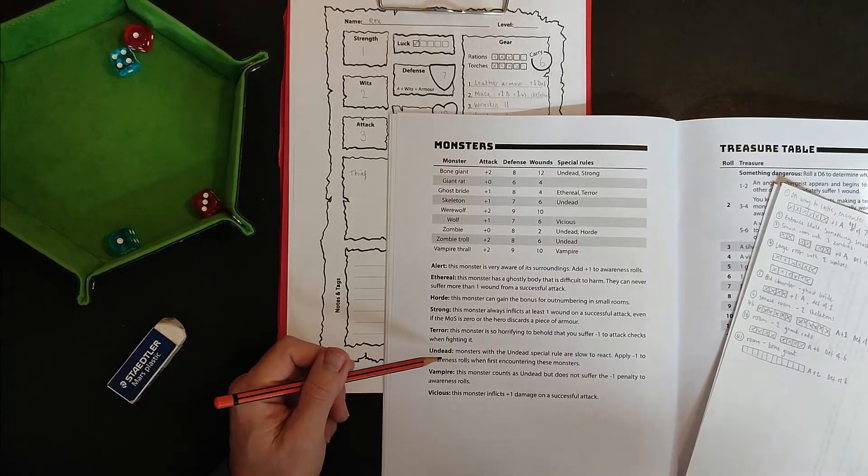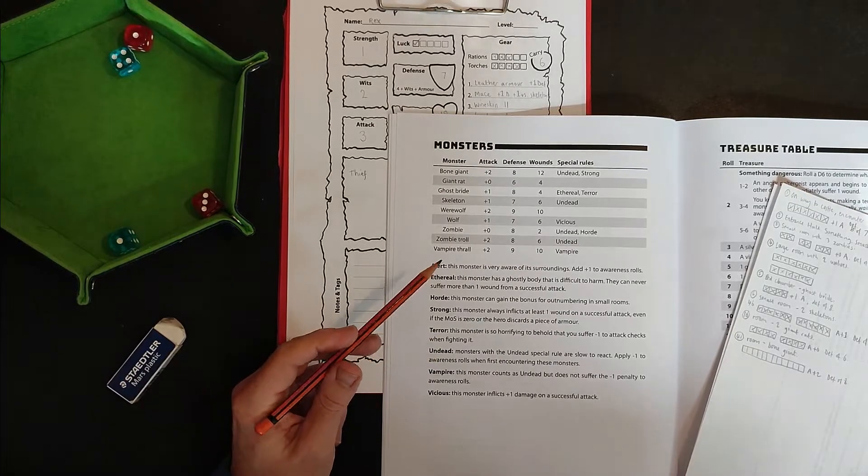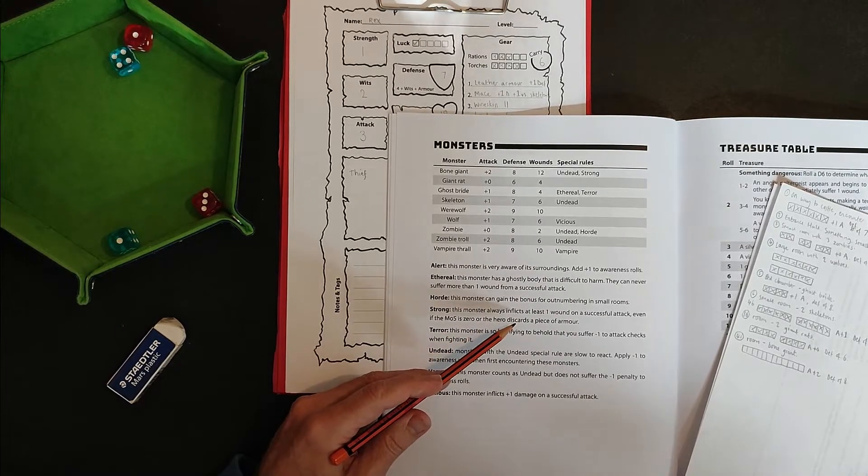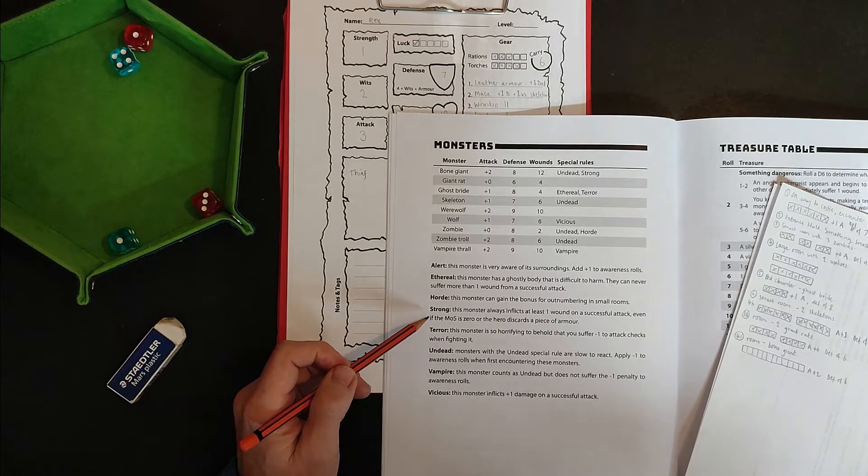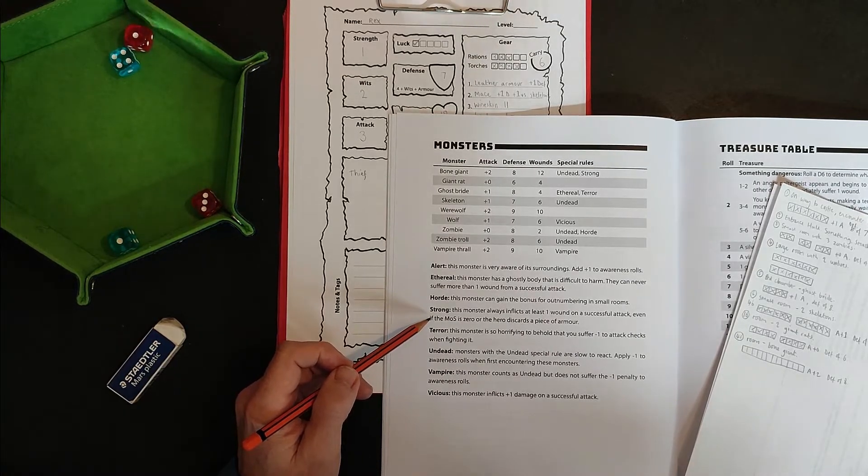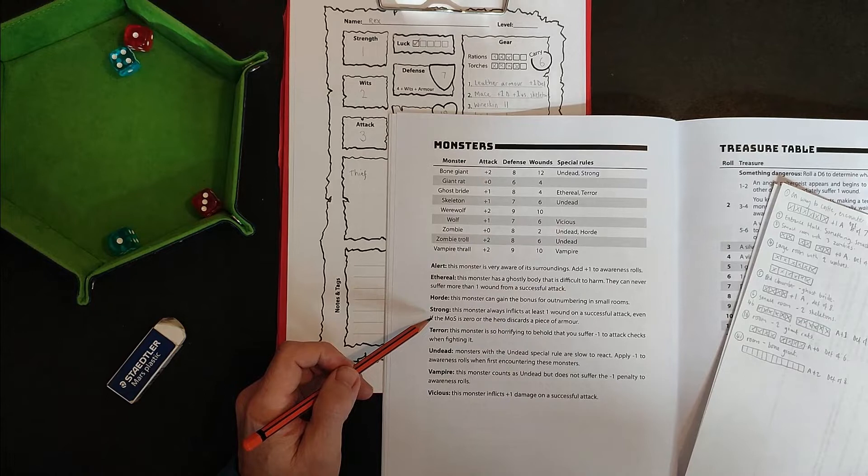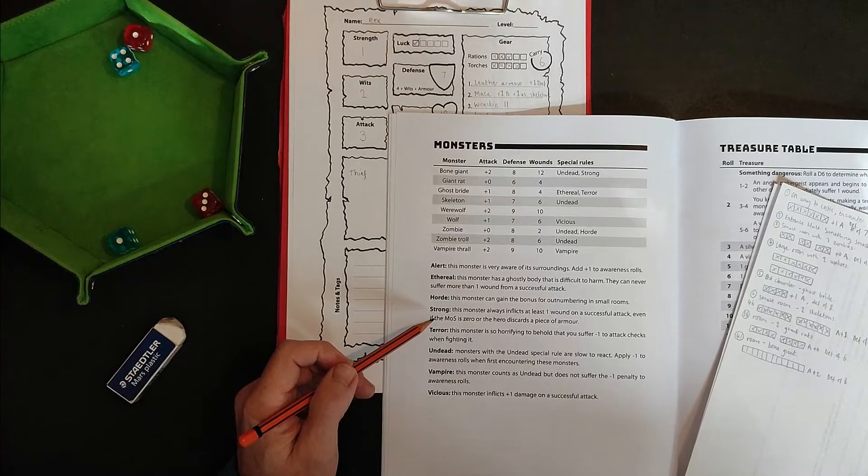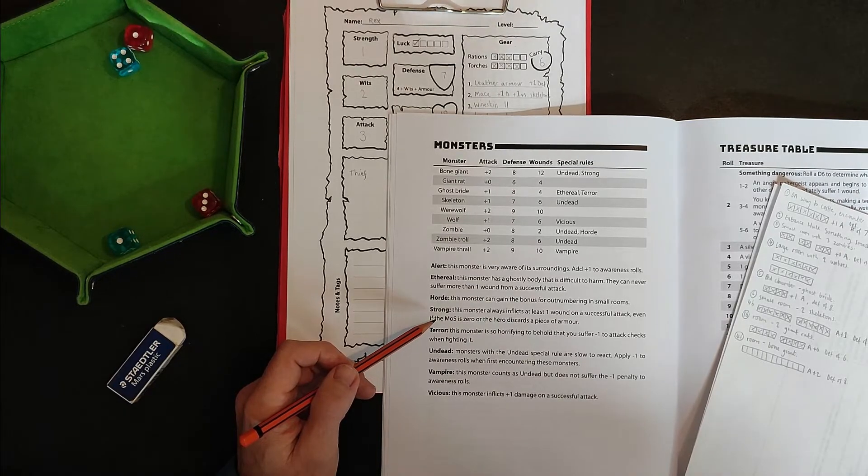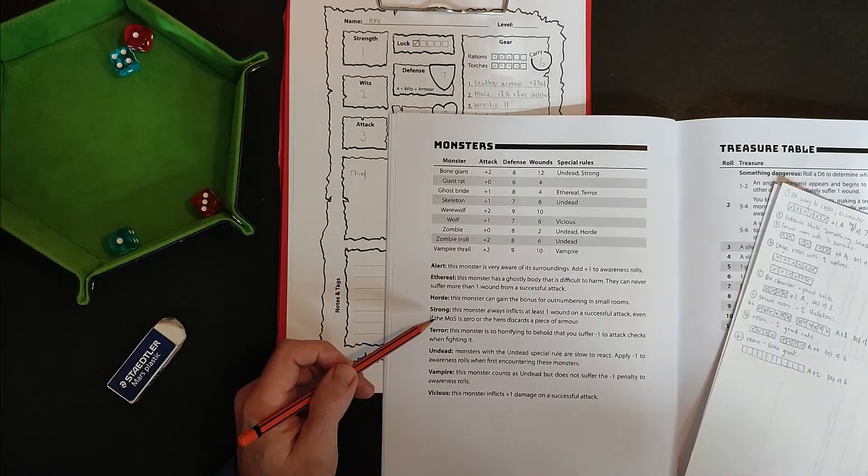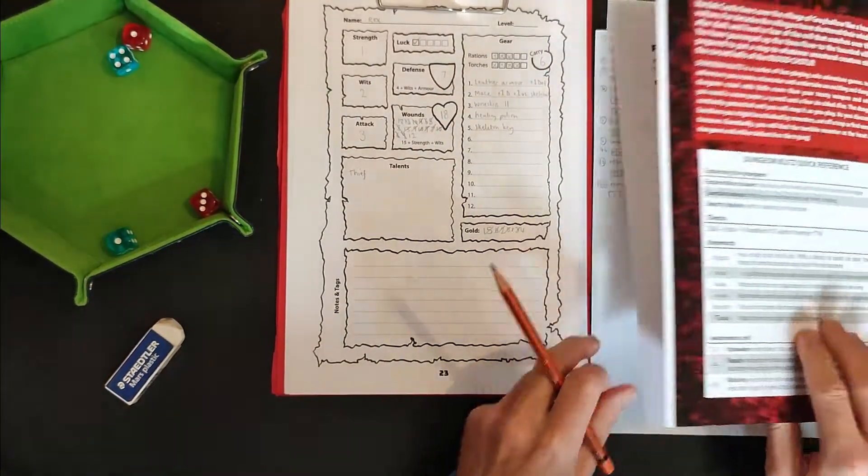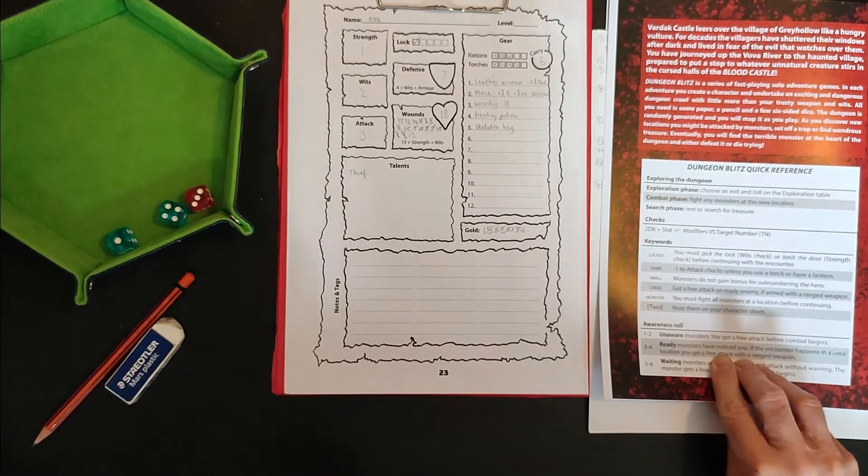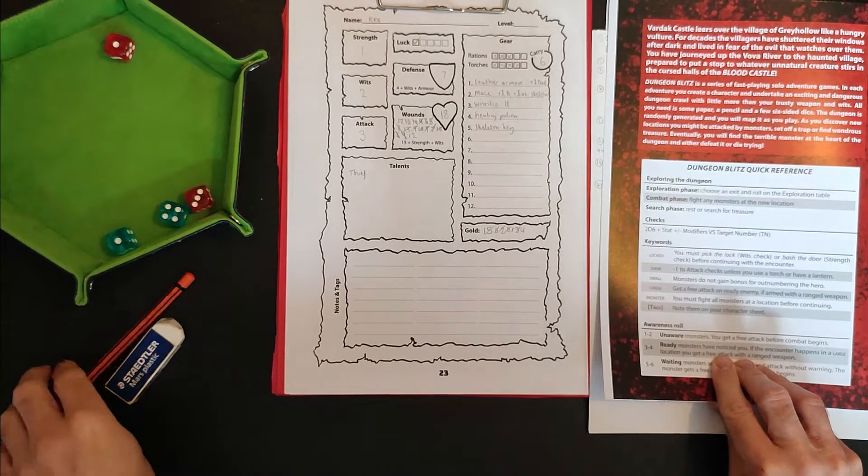This monster always inflicts at least one wound on a successful attack. Even if the margin of success is zero or the hero discards a piece of armor, which you can do, I never mentioned that, but you can discard your armor to negate an attack, which might be a sensible thing to do in a pinch. Not sure I'm liking the sound of this one. Okay, let's see if I catch the bone giant unaware. One. That's good. So I get a free attack. All right, here we go.